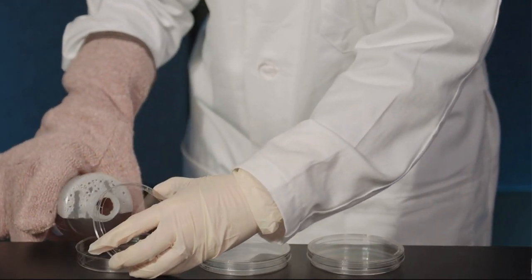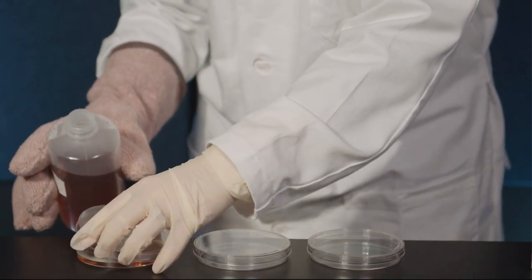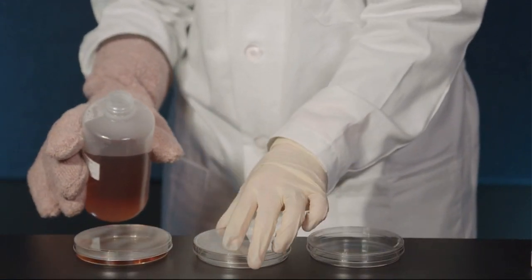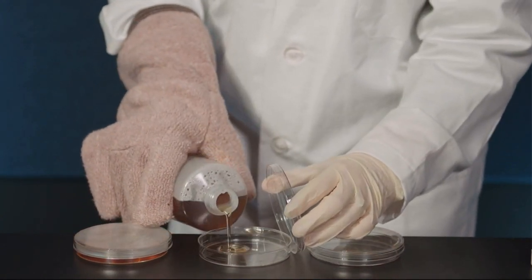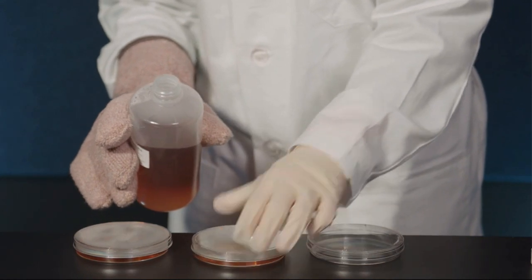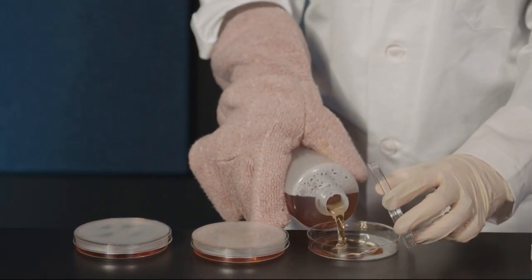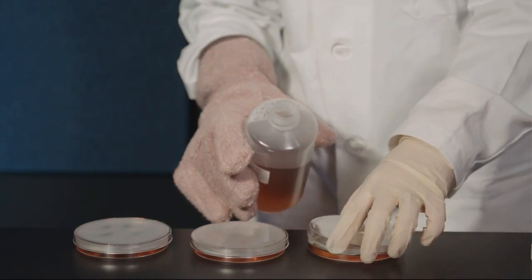The plates should be 0.3 to 0.5 centimeters thick. To maintain sterility as much as possible, remove the lids just long enough to pour the plate. Hold the lid of the petri dish in your free hand as you pour. Hold the lid facing down and do not touch the inside of the plate or lid.